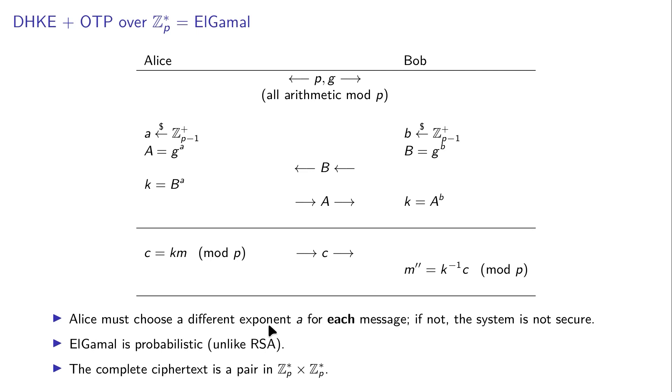So it's important that Alice chooses a different exponent A for each message. If not, the system is not secure. This gives the ElGamal encryption a probabilistic flavor, unlike RSA, and actually this is a very strong, very good property. We can show that ElGamal encryption has properties which are stronger than RSA. And note that the complete ciphertext is a pair, the pair capital A with C, which is a pair in this group.